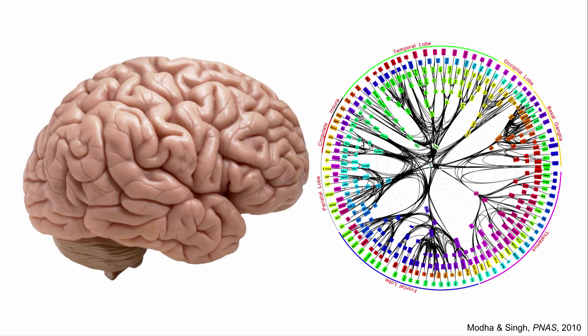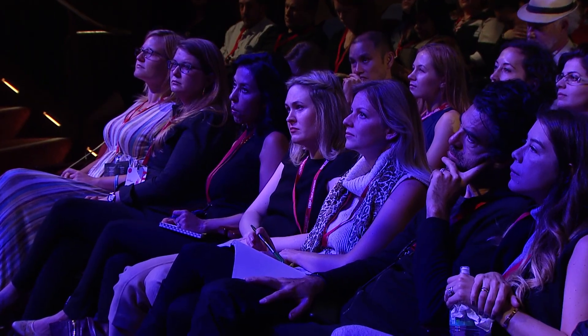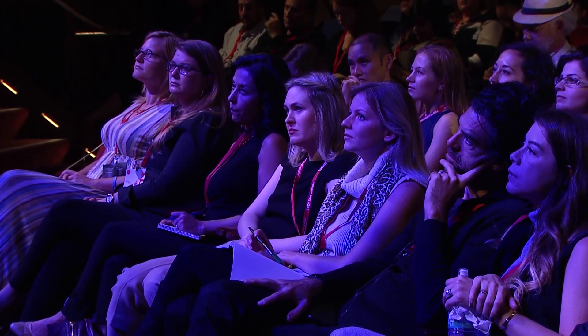The brain looks like a fairly homogeneous organ. There's a cerebral cortex — the big folded part on top — and a cerebellum on the bottom. Underneath the cerebral cortex, this mantle of tissue, there are many subcortical nuclei. Altogether, the brain has on the order of about 500 different parts. About a third are subcortical nuclei and two-thirds are cortical areas that are functionally and anatomically distinct.